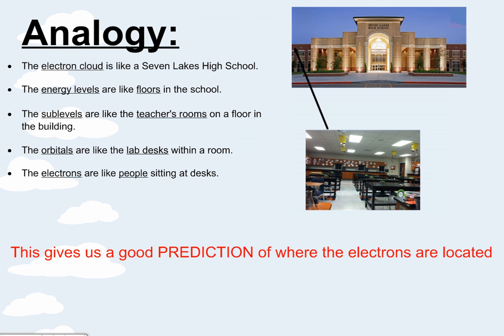So here's an analogy for you. The electron cloud is like Seven Lakes High School. The energy levels are like the floors in the school. The sublevels are like the teacher's rooms on the floor in the building. The orbitals are like the lab desks within a room, like my room. And the electrons are like the people sitting at the desks. So this gives us a good prediction of where electrons are by using these terms: energy levels, sublevels, orbitals. They give us a compartmentalization of the electron cloud.